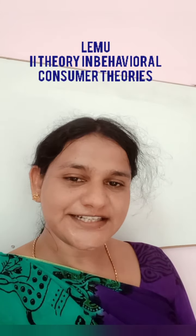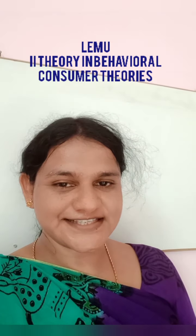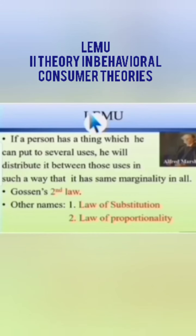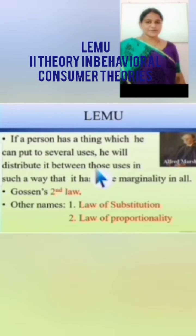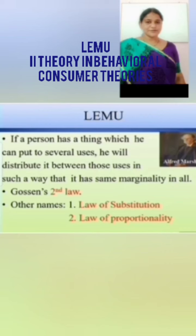LEMU is a new theory in behavioral consumer theories. According to Alfred Marshall, if a person has a thing which he can put to several uses, he will distribute it between those uses in such a way that it has the same marginality in all. We have one thing which we have to put in several uses and we have to get the same marginality from every use.